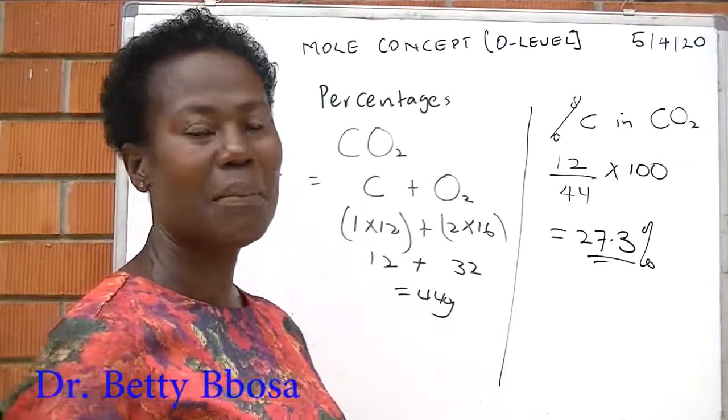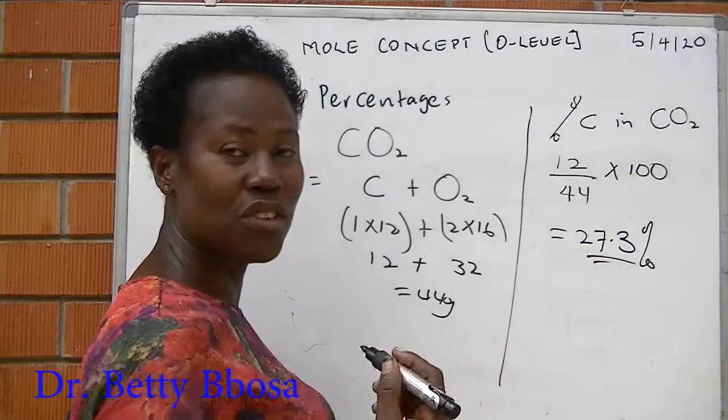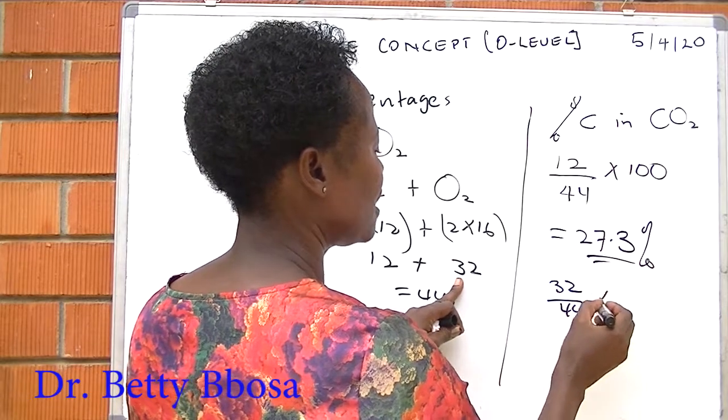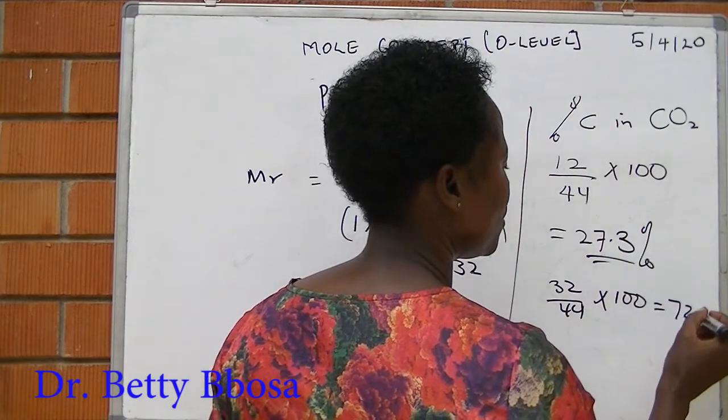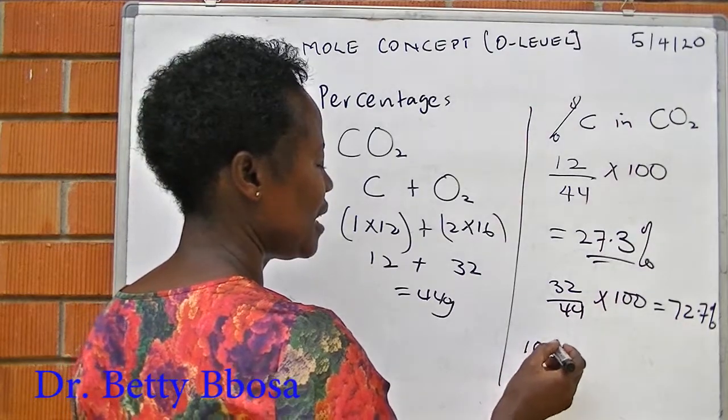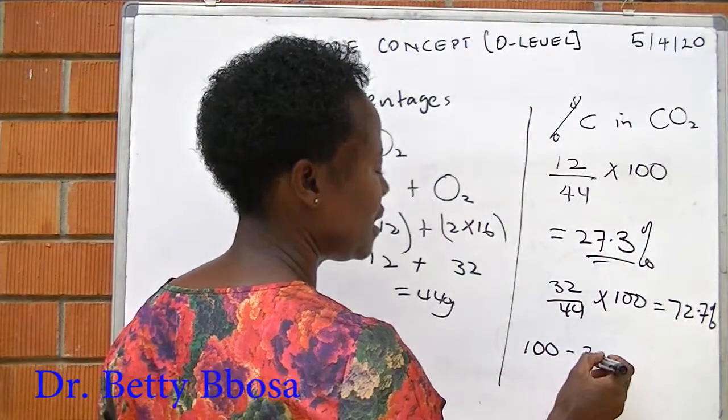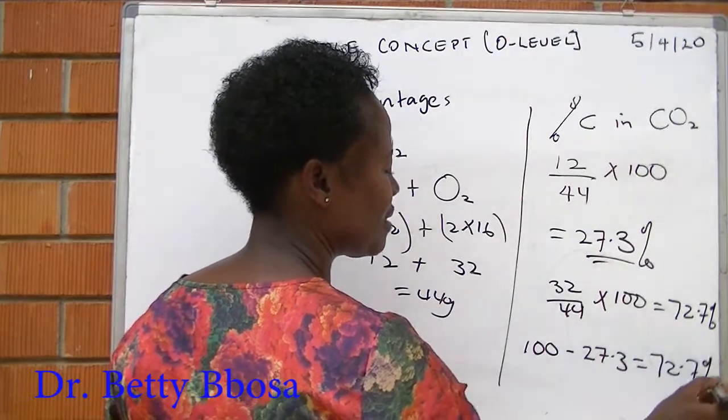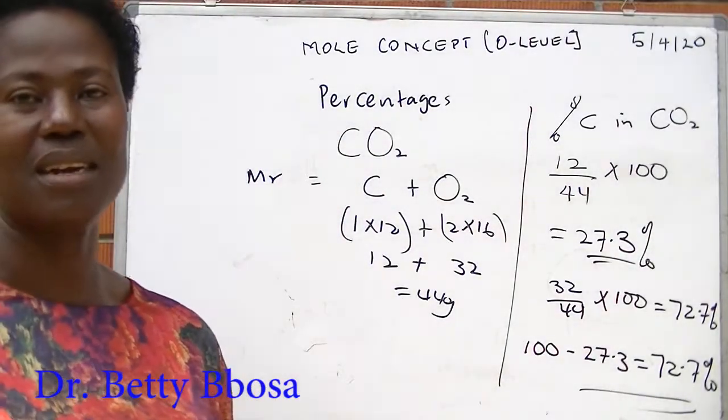We can as well get the percentage of oxygen in the molecule. How? By using two methods. We can either use 32 over 44 times 100, which is equal to 72.7%, or get a hundred subtract the percentage of carbon, and then you get 72.7%. Because the total percentage is always 100%.